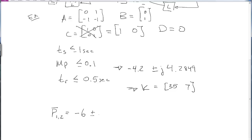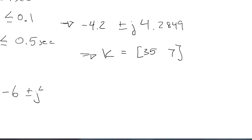So let's go ahead and choose, say, minus 6 plus or minus j times 4.2849. So we'll keep the imaginary part the same. There are different schools of thought on how to do this. This is just one example. So we now need to go into MATLAB and run the place command.